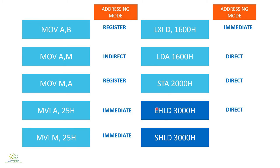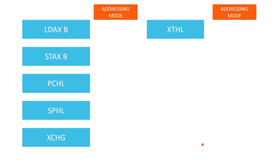Next, LHLD 3000H. In this case, the HL pair has to be loaded from memory locations 3000H and the consecutive 3001H. The memory location of the data is already given in the instruction, so it has direct mode of addressing. Similarly, SHLD 3000H: the content of HL pair has to be stored at an address already given in the instruction, so this is also direct mode of addressing.